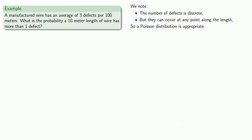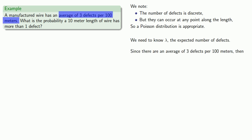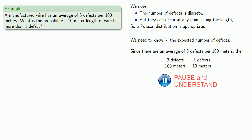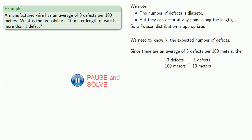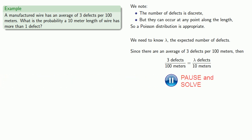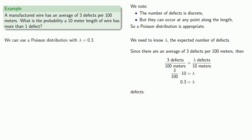In order to use the Poisson distribution, we need to know lambda — the expected number of defects. Since there are an average of 3 defects per 100 meters, we can set up the proportionality: 3 defects per 100 meters is lambda defects per 10 meters. Solving this equation gives us lambda equal to 0.3 defects, and so we can use a Poisson distribution with lambda equals 0.3.